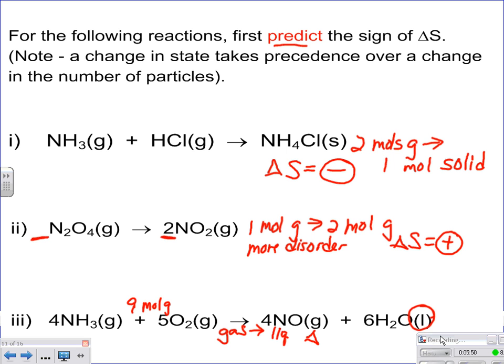So it's more ordered or less disordered. Therefore, your delta S is going to be a negative value.